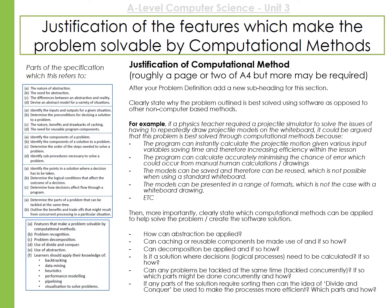Make sure you've finished your project definition before moving on. Section two should be the justification of the features that make your problem solvable by a computer or computational methods. This should be much more extended than the project definition. You need a new subheading for this.